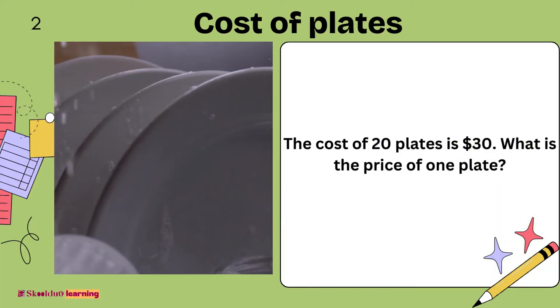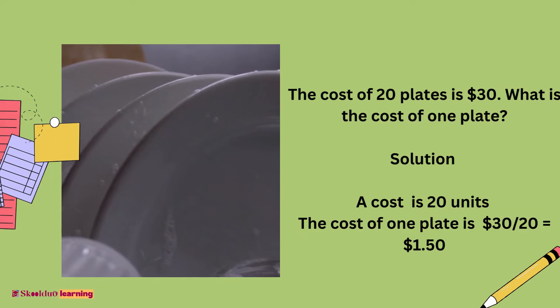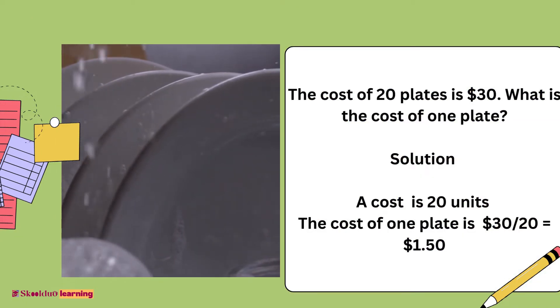Number 2. The cost of 20 plates is $30. What is the price of one plate? There are 20 units. The cost of one plate is $30 divided by 20, which equals $1.50.